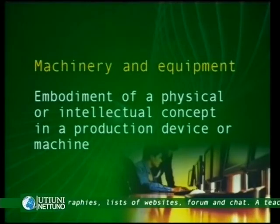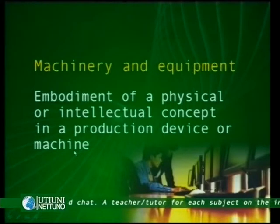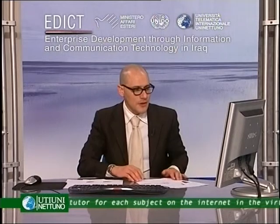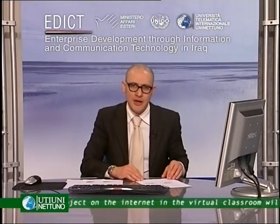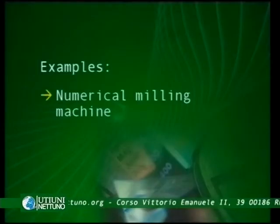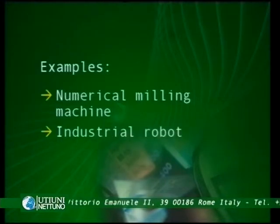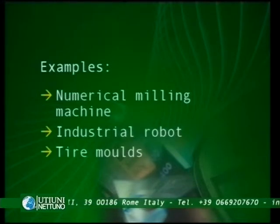When it comes to machinery and equipment, it's the embodiment of a physical or intellectual concept in a production device or machine. Machinery, equipment and other physical devices which are able to transform inputs into outputs, materials and other services into physical goods or services, could be an artifact and could embody a physical or intellectual concept. For example, we have the numerical milling machine, the industrial robot and tire molds — a way in which a body of knowledge is embedded into physical devices.